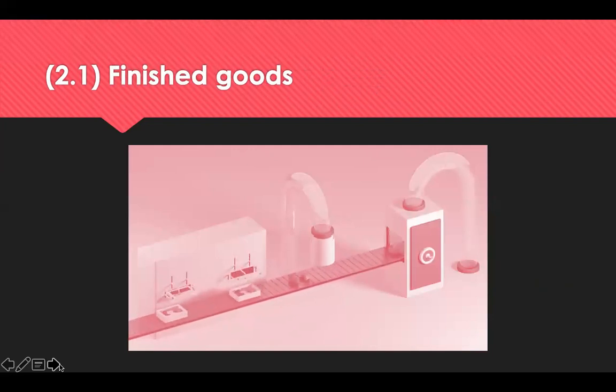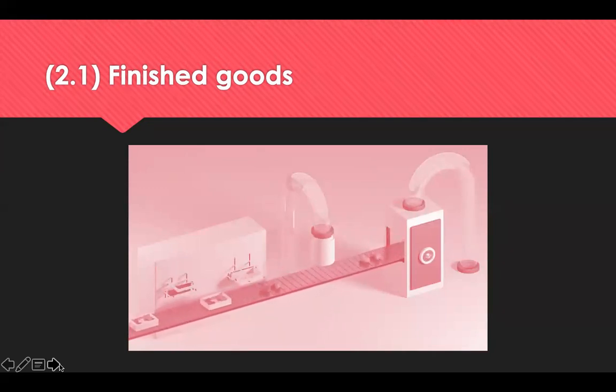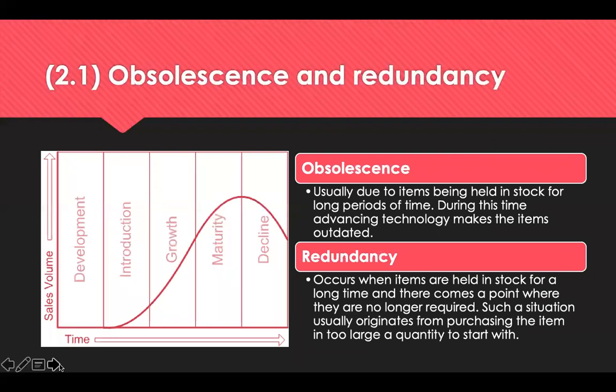Finished goods are goods that have been completed by the manufacturing process or purchased in a completed form, but which have not yet been sold to the customer. They have reached their highest value since being manufactured from raw materials and constructed from component parts. The finished goods inventory is considered a short-term asset, since the expectation is that these items will be sold within one year or less. Obsolete stock refers to inventory that has reached the end of its product life cycle, typically determined by a set period of time with no sales for a specific product. Redundant stock refers to inventory items replaced by an alternative or rendered unusable, or diminishing in value — they've either been discarded or sold at a highly discounted price.